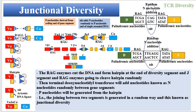Since the gene cannot be left open, terminal deoxynucleotidyl transferase starts to add nucleotides known as N nucleotides — non-templated nucleotides. As can be seen, these added nucleotides are different from each other, which leads to an increase in TCR diversity. The joining of different gene segments is directed by the role of 12 base pair to 23 base pair recombination signal sequence spacers.